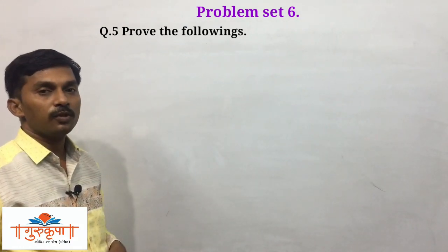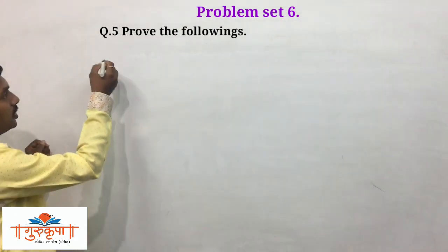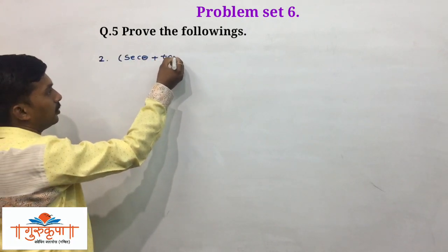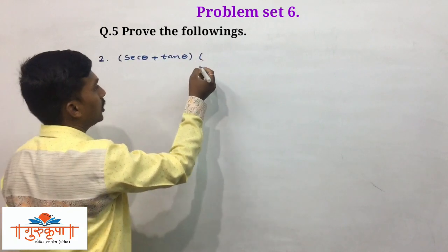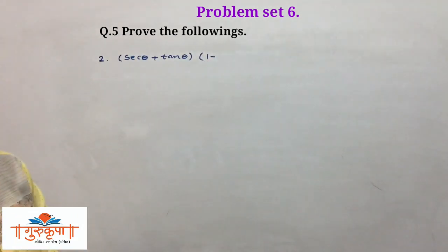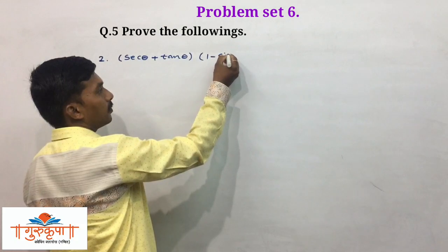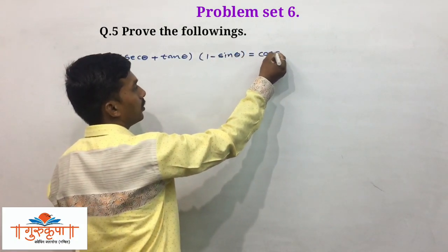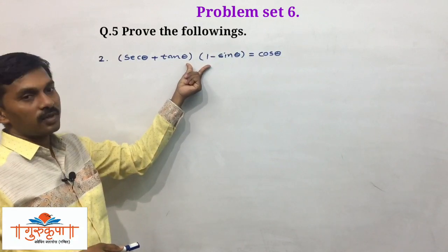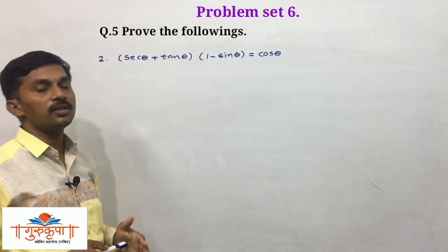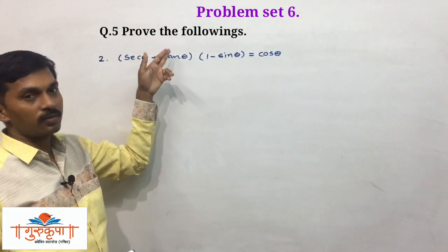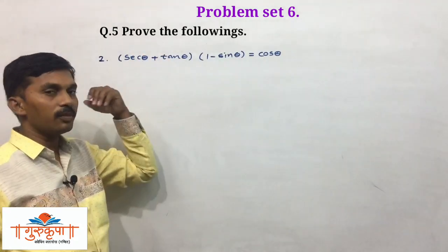Second example from question number 5, problem set 6. The question is: prove that (sec theta plus tan theta) into (1 minus sin theta) equals cos theta. If we observe carefully, the first example and the second example are essentially the same — both examples are the same.